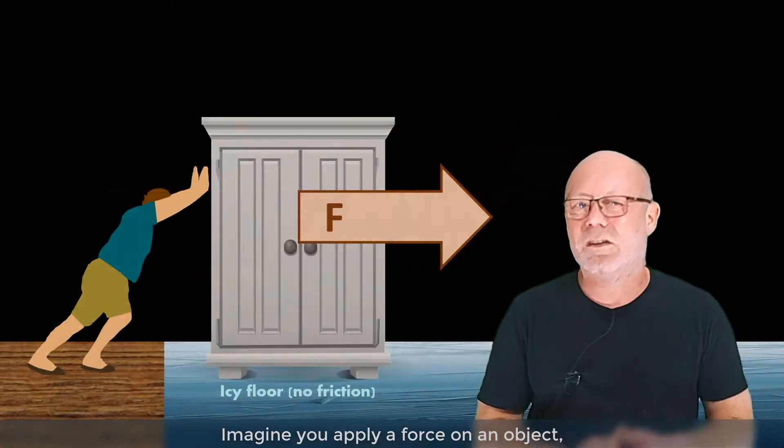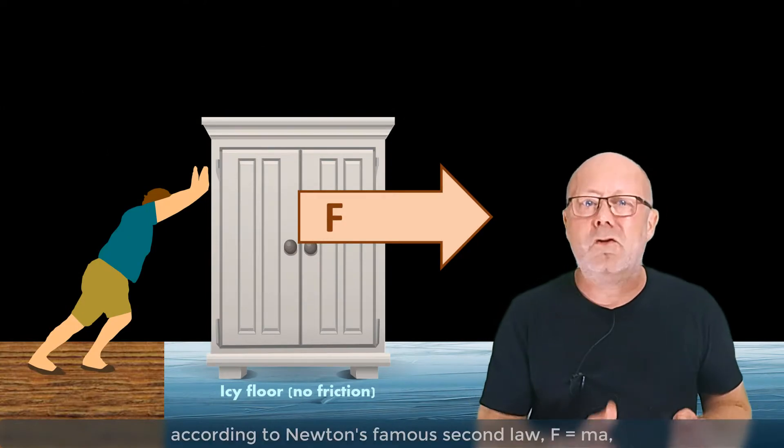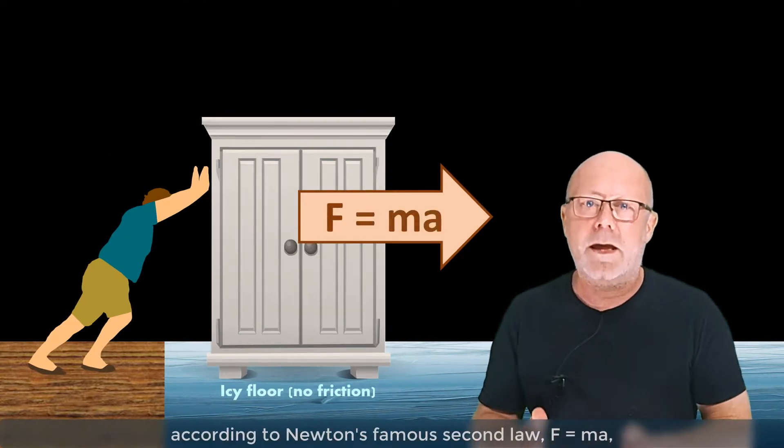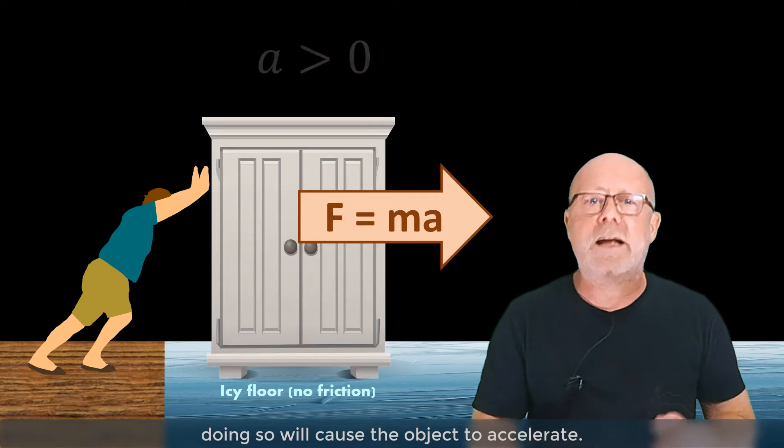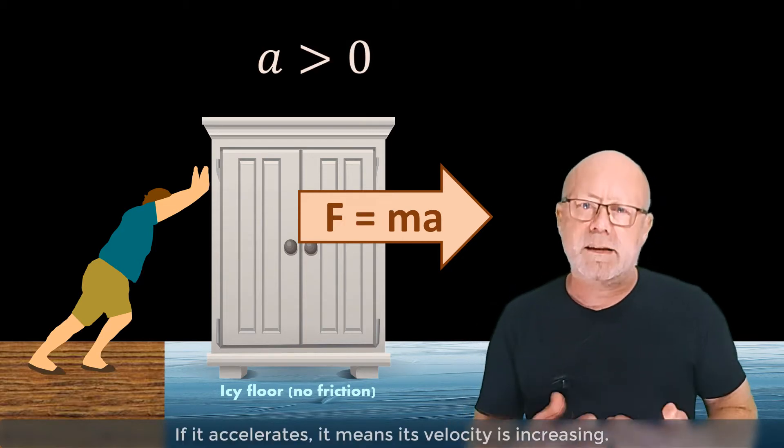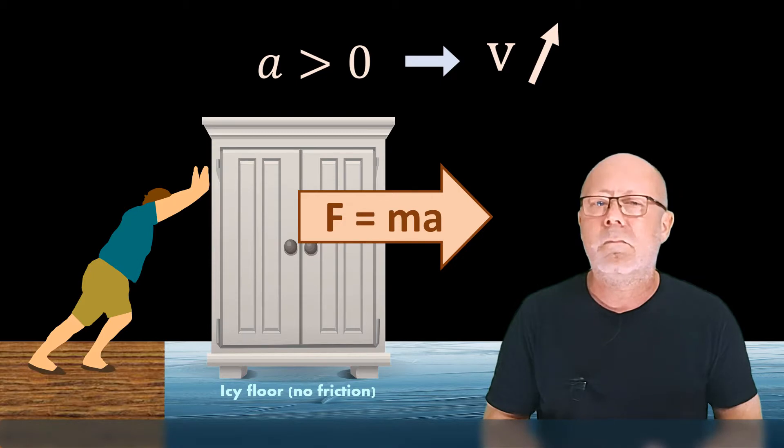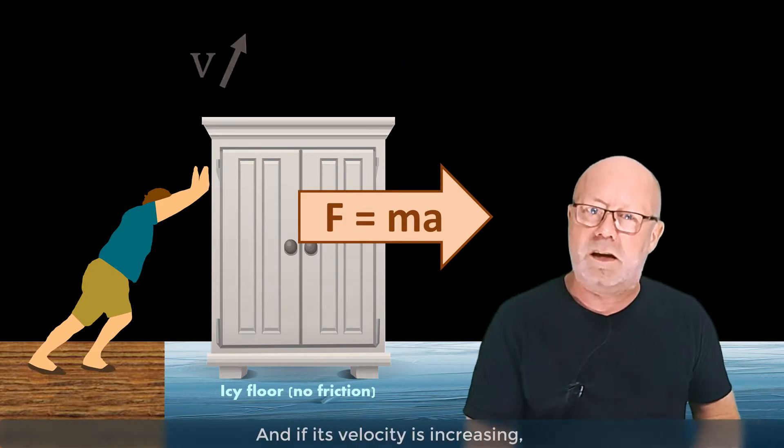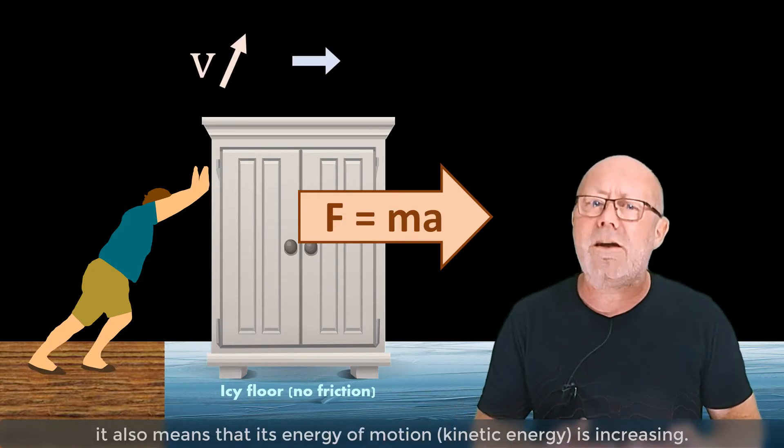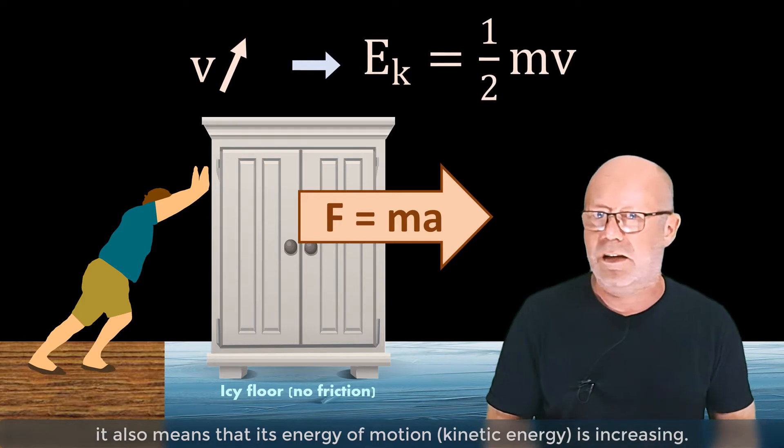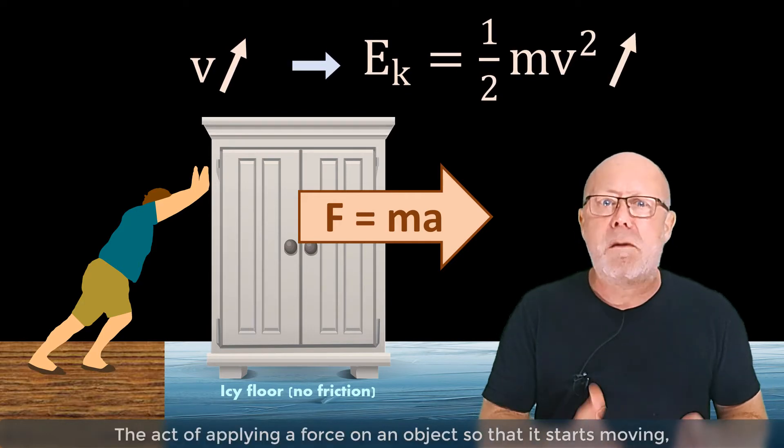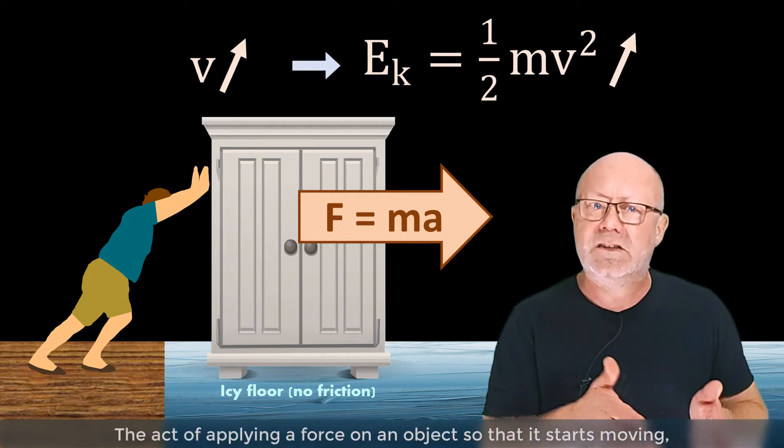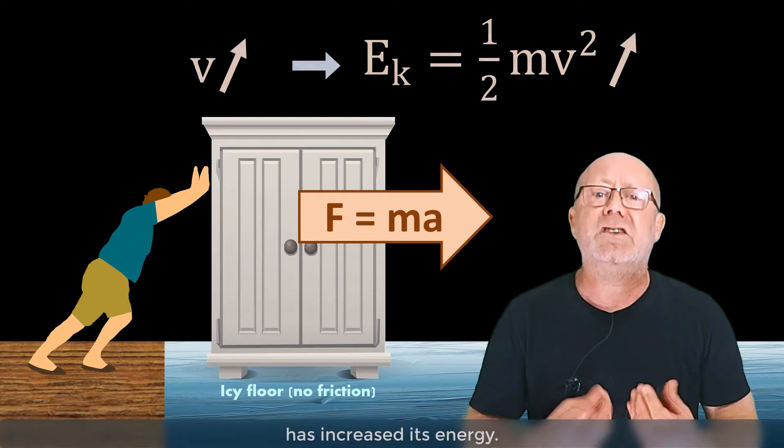Imagine you apply a force on an object. According to Newton's famous second law, F equals ma, doing so will cause the object to accelerate. If it accelerates, it means its velocity is increasing. And if its velocity is increasing, it also means that its energy of motion is increasing. So the act of applying a force on an object so that it starts moving has increased its energy.